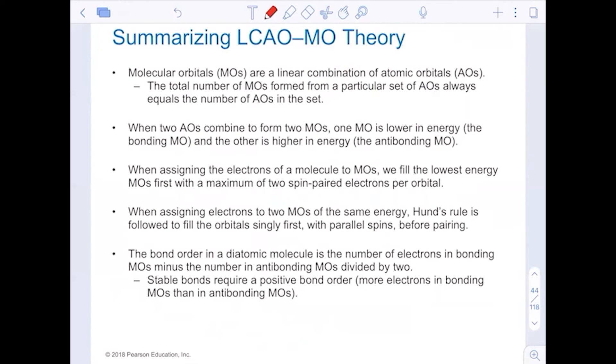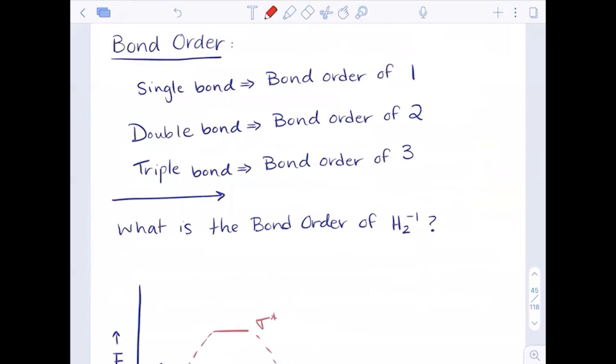So MOs are a linear combination of atomic orbitals. The total number of MOs formed is always going to be equal by the number of atomic orbitals that it actually came from. So if two atomic orbitals go in, two molecular orbitals have to come out. And when assigning the electrons of a molecule to the MOs, we fill the lowest first Aufbau principle. We make sure we follow Hund's rule with degenerate orbitals. And then we can also make sure we follow the Pauli exclusion principle with only two electrons in each MO.